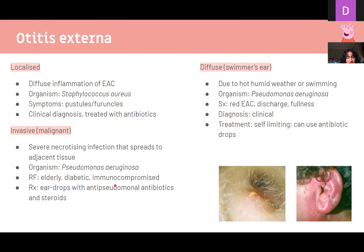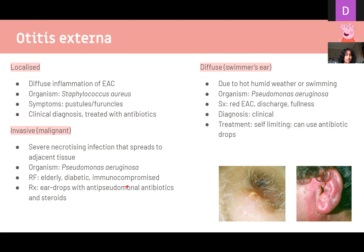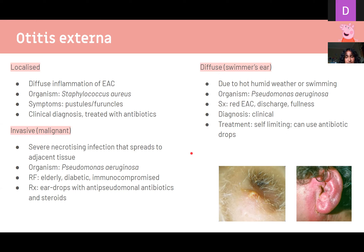Otitis externa is inflammation of the ear canal with three types. Localized: inflammation around hair follicles causing pustules and furuncles, usually caused by Staphylococcus aureus. Invasive/malignant: more serious, infection spreading from the outer ear to adjacent structures causing necrosis, usually caused by Pseudomonas aeruginosa, seen in elderly, diabetic, and immunocompromised patients — requires hospital admission and anti-pseudomonal antibiotic ear drops. Swimmer's ear is also caused by Pseudomonas aeruginosa, presenting with a red ear canal and discharge, treated with antibiotic drops.